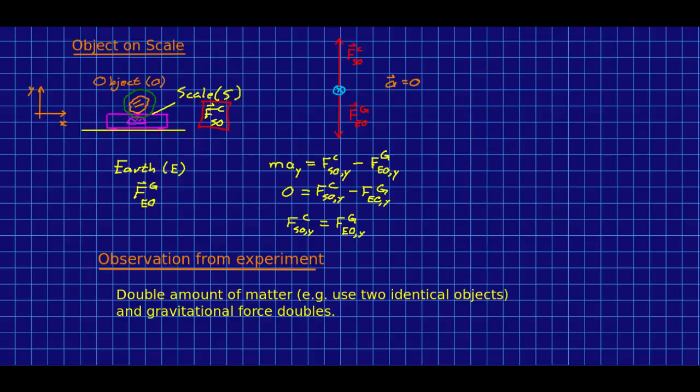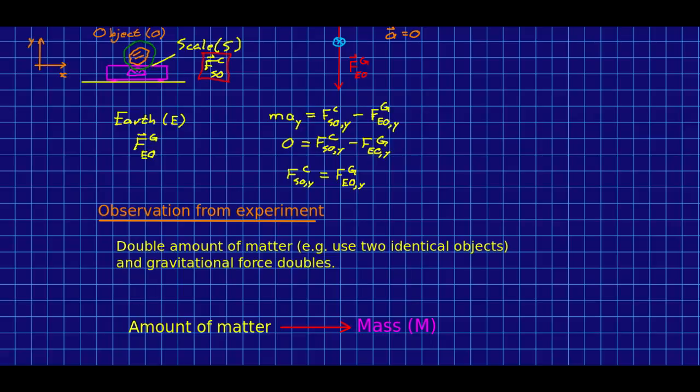Now let's use this to do an experiment about gravitational forces. You can easily double the amount of matter on your scale. Just use two identical objects instead of one. And so you've doubled the amount of matter. And what you find experimentally is that this somewhat indirectly measured gravitational force doubles when you do that. Well, the amount of matter is what we call mass.